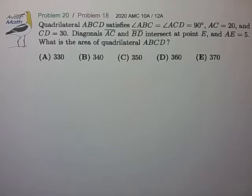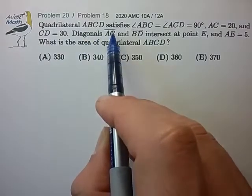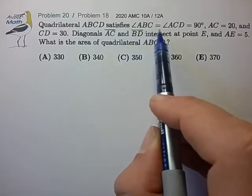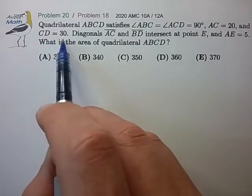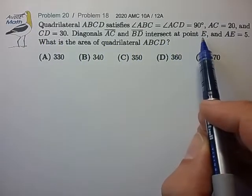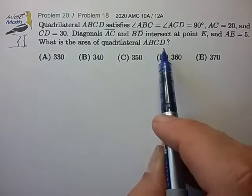Hi, this is problem 20 from the 2020 AMC 10A. Quadrilateral ABCD satisfies right angle at B and C, length AC of 20, length CD of 30. The two diagonals intersect at point E such that AE is 5. What is the area of the quadrilateral?